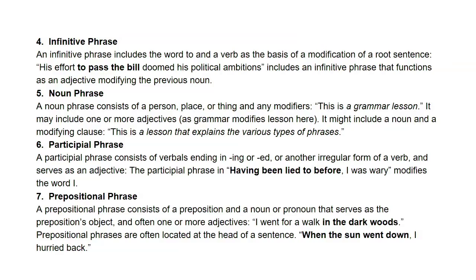The participle phrase consists of a verbal ending in -ing, -ed, or another irregular verb form and serves as an adjective. Example: 'Having been lied to before, I was weary' — the participle phrase modifies 'I.' A prepositional phrase consists of a preposition and a noun or pronoun as the preposition's object, often with adjectives. Example: 'I went for a walk in the dark woods.' Prepositional phrases are often at the head of a sentence: 'When the sun went down, I hurried back.'